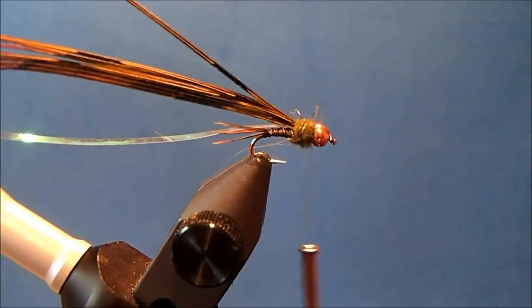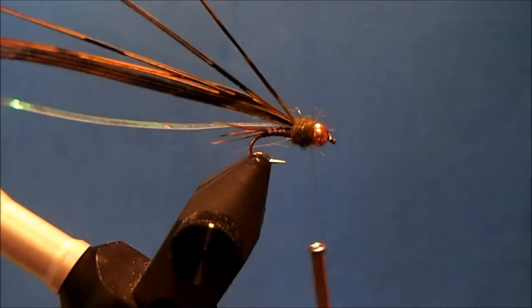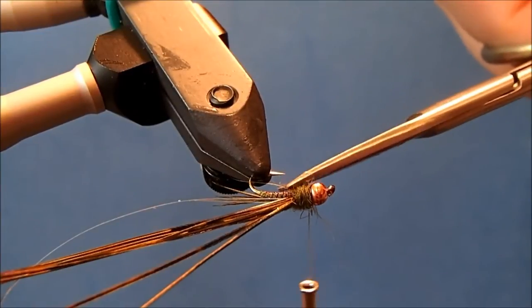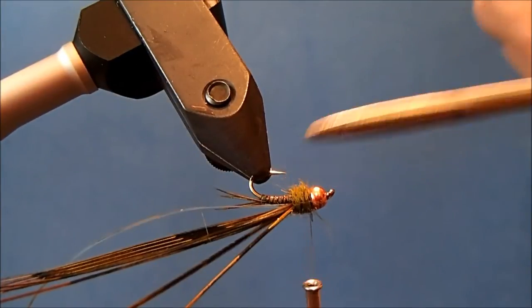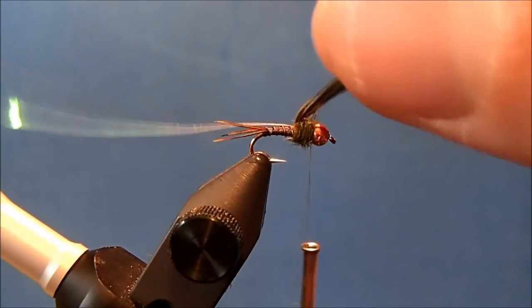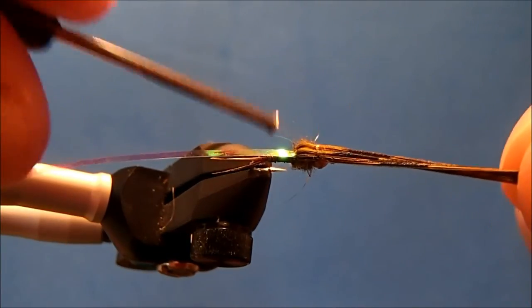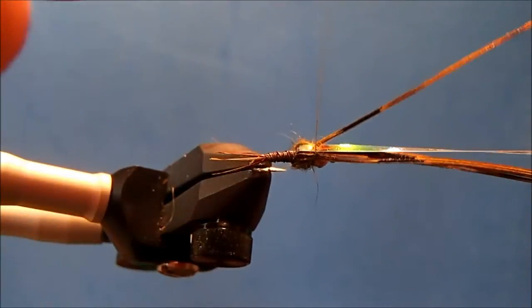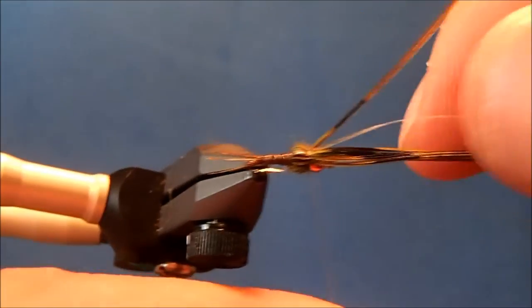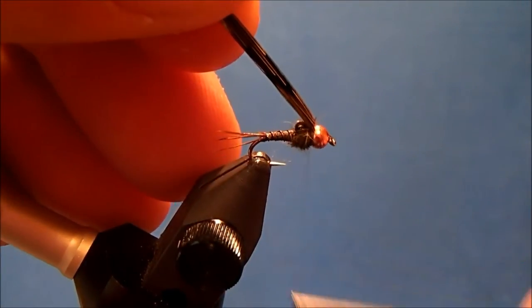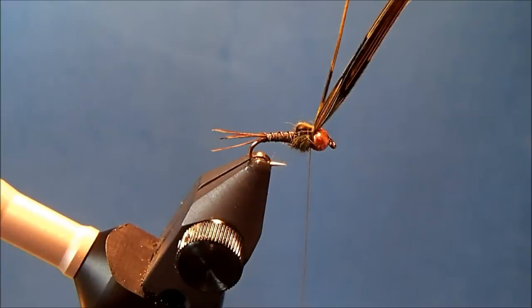Now I can bring up my pheasant tail—just straight up and over—making sure it covers the back. I'll do the same with my pearl tinsel, straight up and over. I'll make any adjustments, then two wraps on top. I'll pull everything back, take two wraps underneath, and trim this off.